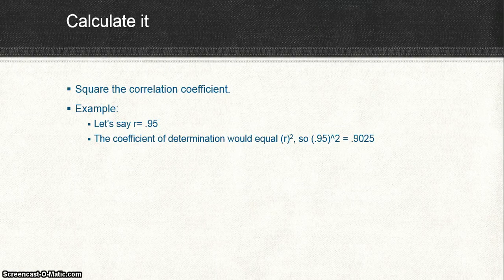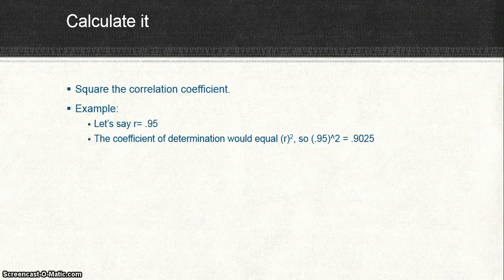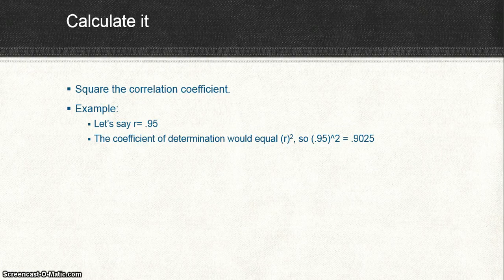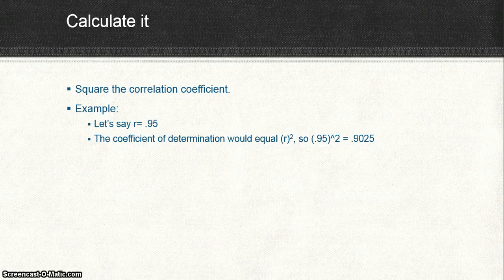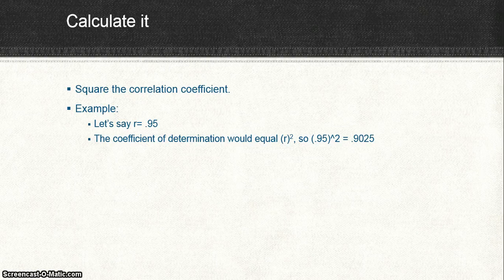As it is called r squared, we simply square r, which is the correlation coefficient. So, let's say our r is equal to 0.95. Well, the coefficient of determination would simply be equal to r squared. So 0.95 squared is 0.9025. And that 0.9025 is our coefficient of determination.